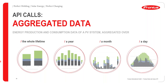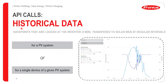With aggregation data, you can get energy production and consumption aggregated over the entire system lifetime, a year, a month, or even a single day. With historical data — logged every five minutes at the inverter — you can retrieve five-minute interval data from SolarWeb for a PV system or for a single device within a given PV system.